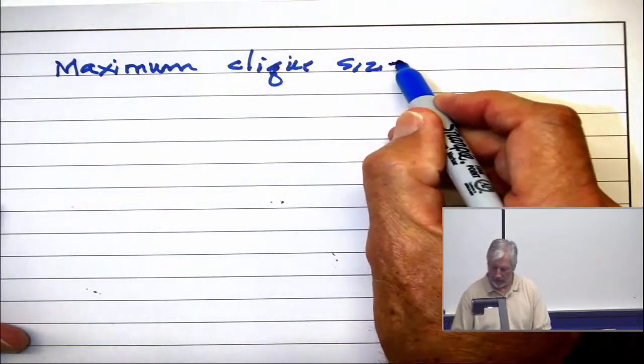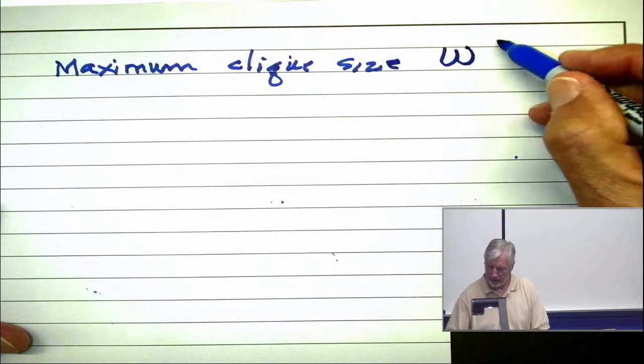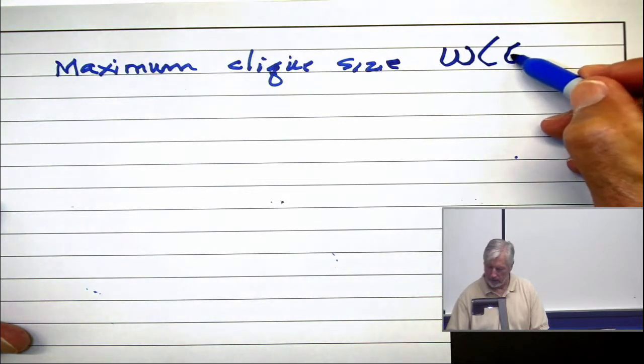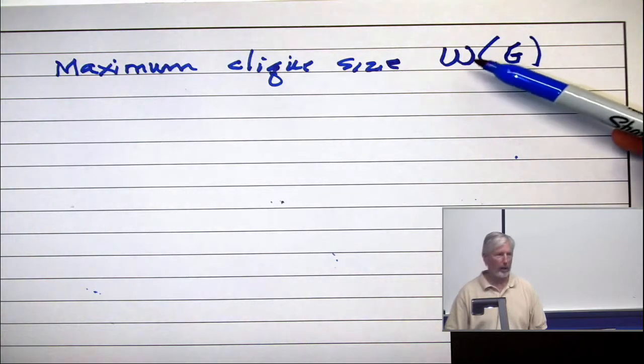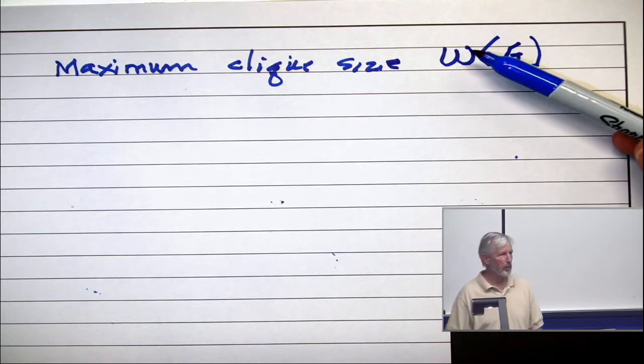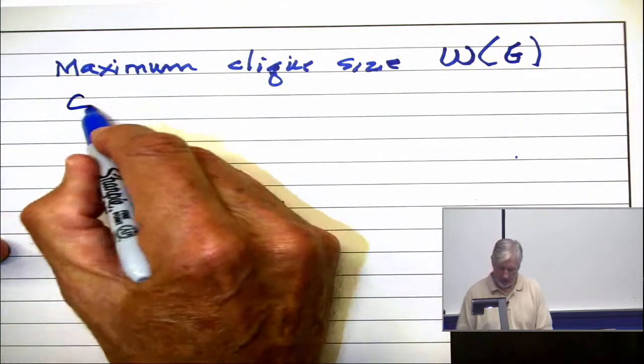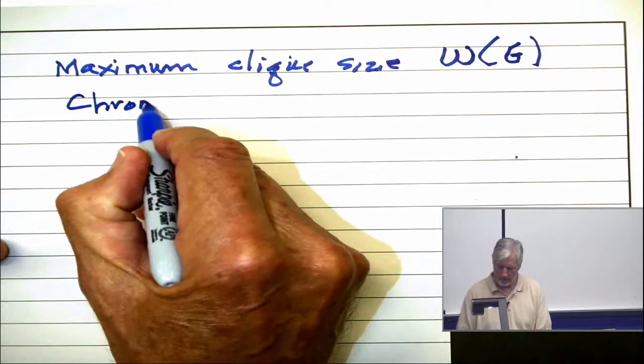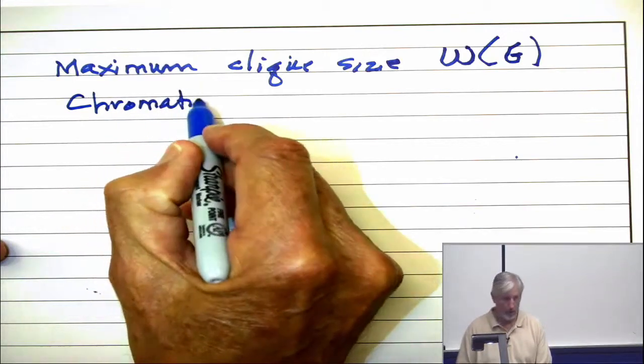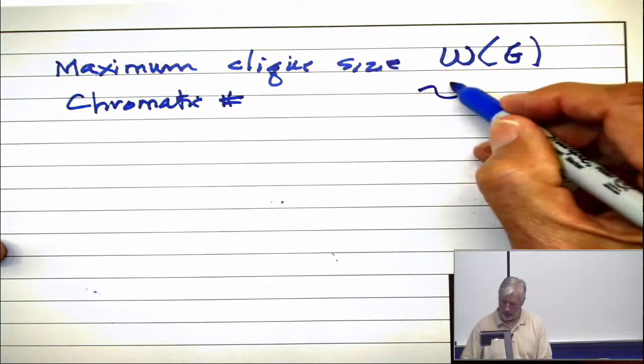We have maximum clique size, and that's denoted omega of G. That symbol right there is the lowercase Greek omega. Looks like a W, like a script W, but it's not a W. It's a Greek omega. And then the chromatic number is denoted chi of G.